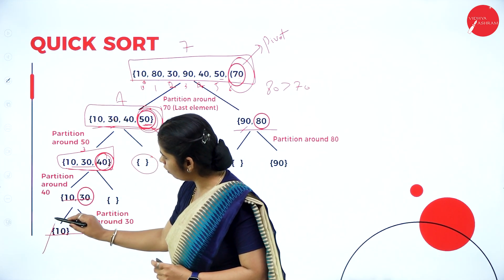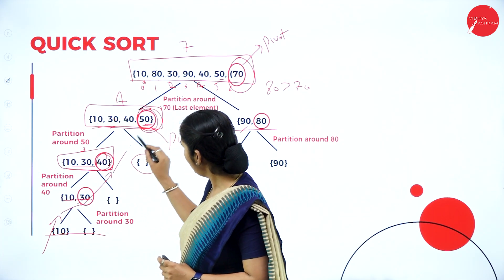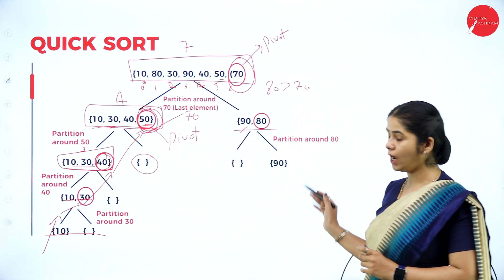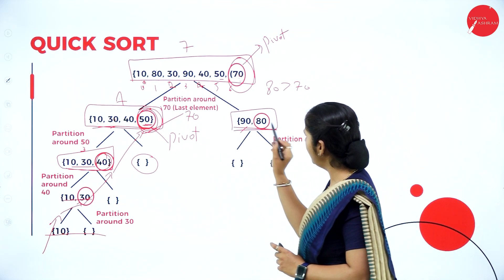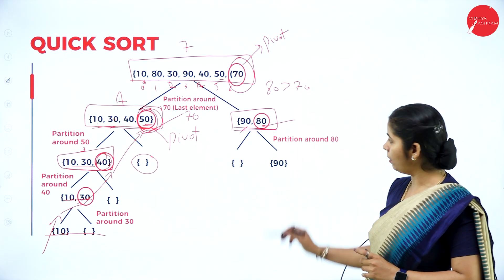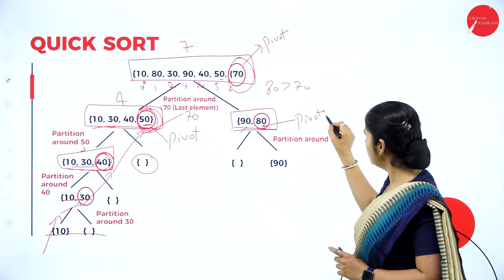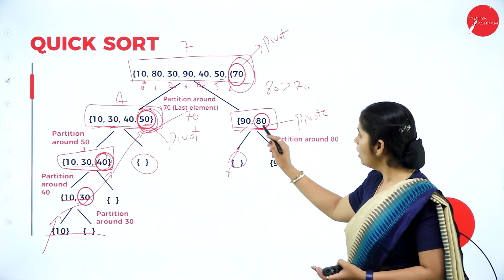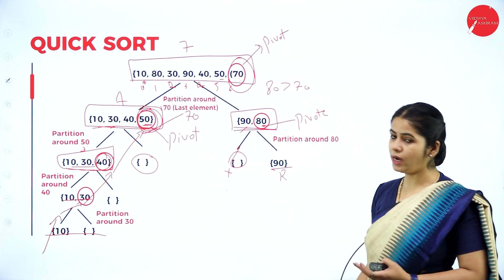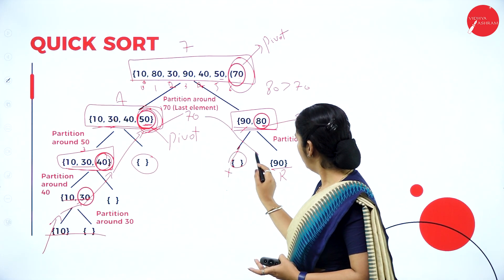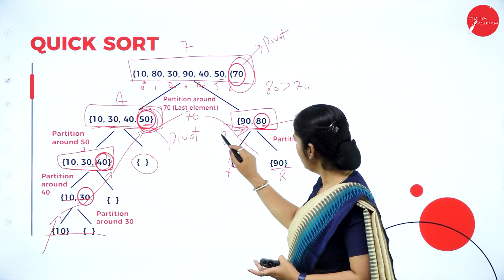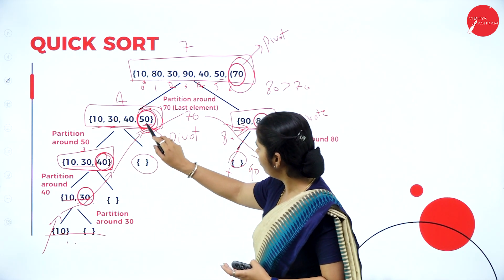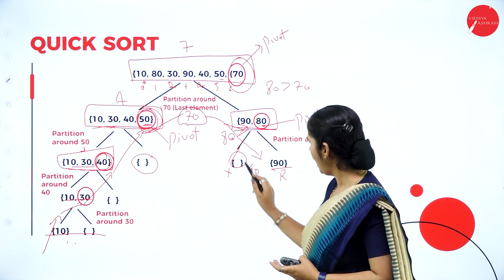When we trace back, we get 10, 30, 40, 50 and the pivot element 70 — one part of the array is sorted. Coming to the right part of the array, we find the pivot element again, keeping 80 as the pivot element. There is no element less than 80, so nothing goes to the left. 90 is greater than 80, so it goes to the right. Now you can see the elements of the array are sorted: 10, 30, 40, 50, 70, 80, and 90. This is how quick sort works.